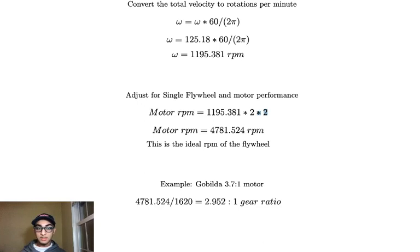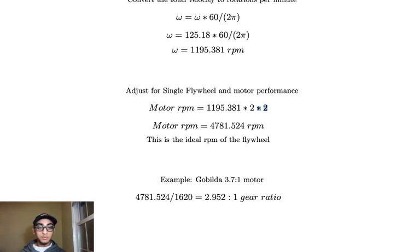So in FTC, there's no motor that's going to go that fast unless you use a bare motor. But for this next example, I'm going to use a Gobilda 3.7 to 1 motor and find out what kind of gear ratio I need. So I divide the RPM of our flywheel by the RPM of the Gobilda motor, which is 1620. And I get an ideal gear ratio of 2.952 to 1. So this is going to mean that our flywheel, we're using the gear ratio to speed up the flywheel. So you're going to want the bigger gear on your motor and the smaller one on your flywheel.